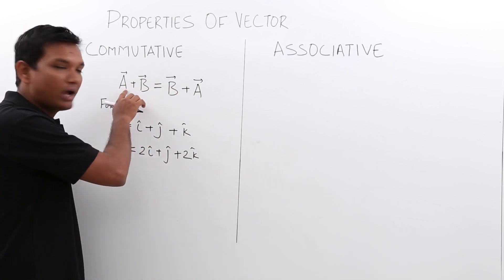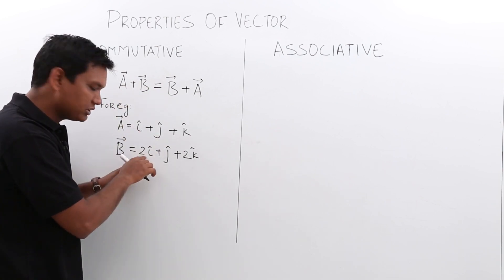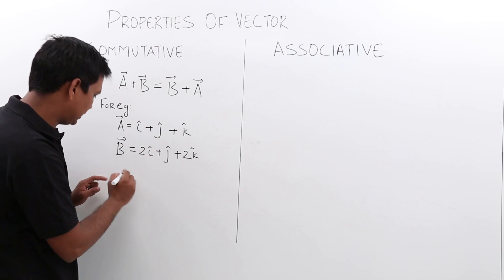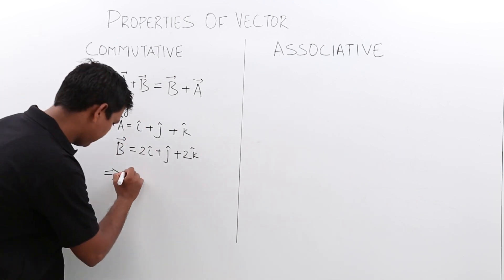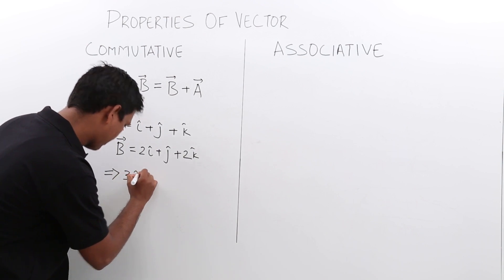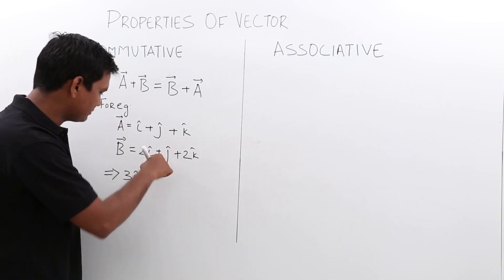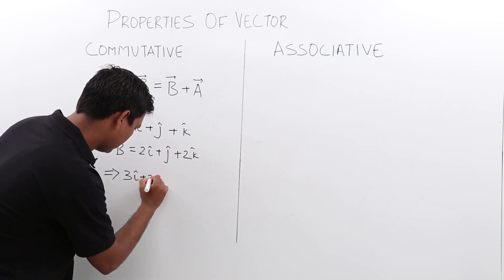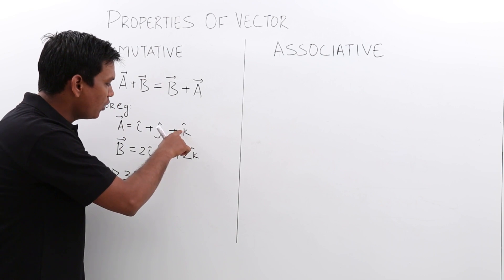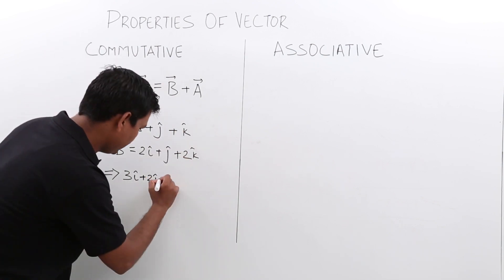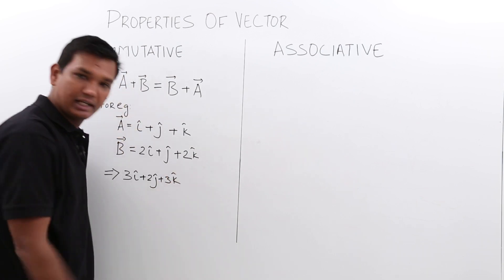In LHS, I have to add A plus B. So it should be 1i cap plus 2i cap which comes out to be 3i. Then 1 plus 1 which comes out to be 2j cap. Then 1 plus 2 which comes out to be 3k cap.